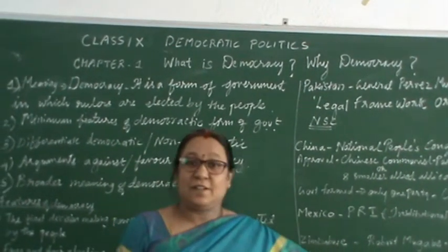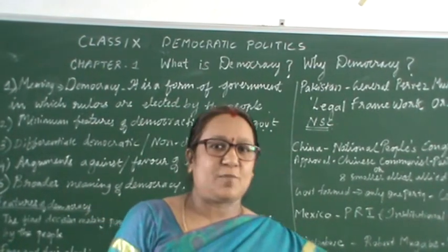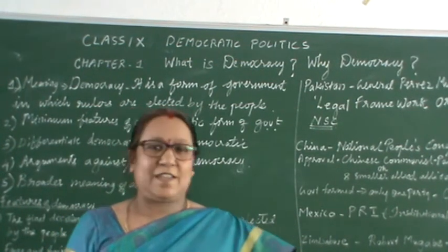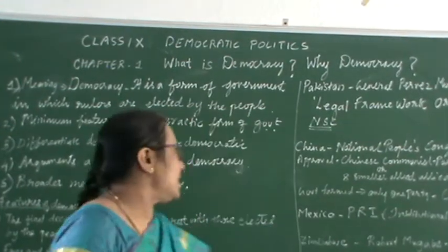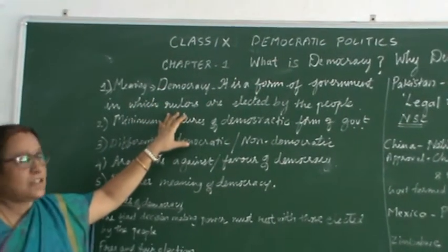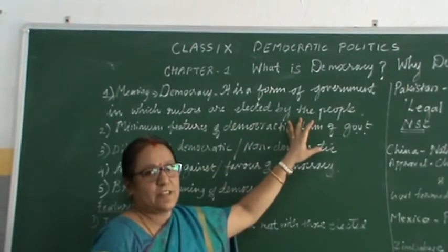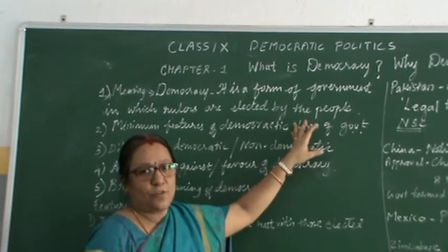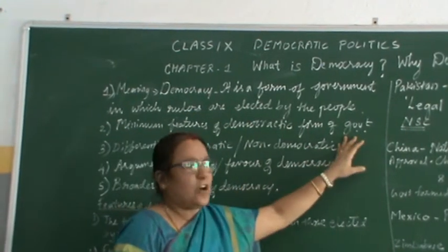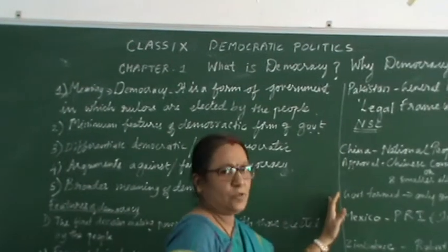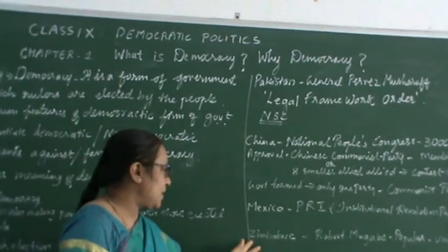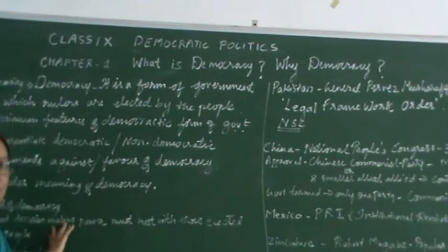All of us have heard this word democracy. India is the largest democratic country in the world. In your earlier classes we learnt about the meaning of democracy, what are the key elements of democracy. In this lesson we try to understand what is the simple definition of democracy and what are the features of the democratic form of government. A few examples are given in your textbook — countries like Pakistan, China, Mexico, Zimbabwe — so that we can arrive at the features of democracy.